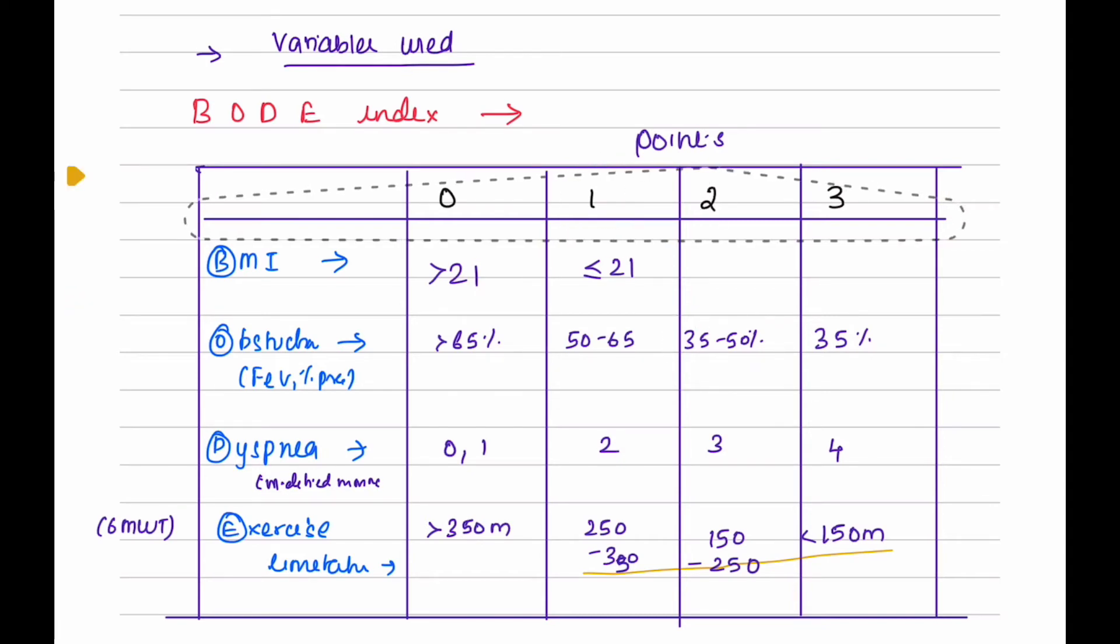Based upon the dyspnea grading, the score would be 0 if the mMRC grading for dyspnea is 0 or 1, and the score would be one if the mMRC grade for dyspnea is 2. The score would be two if the dyspnea grading is three, and the score would be three if the dyspnea grading is four.